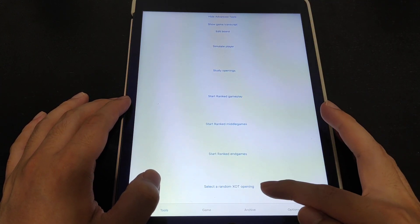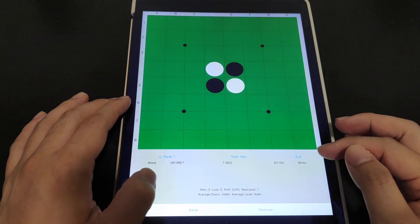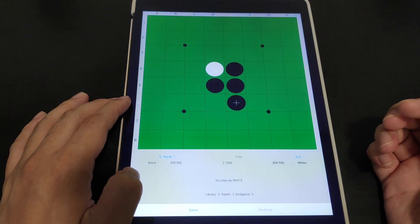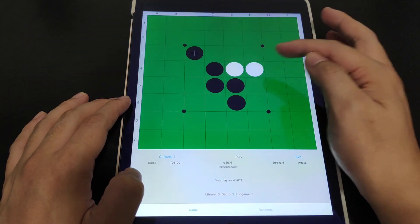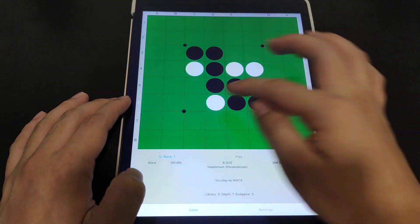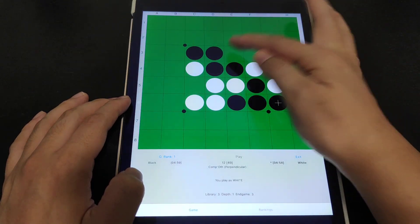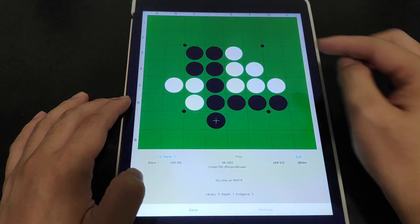Let's just exit the mid game test first and then we can go to advanced tools again. You can see the start rank gameplay and select random XOT opening. If you start rank gameplay I think it's basically playing an AI of a lower level. So you can also play against AI.